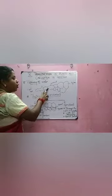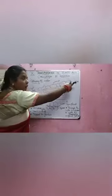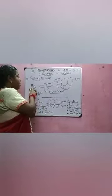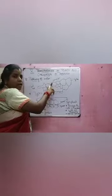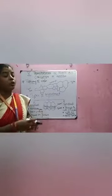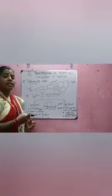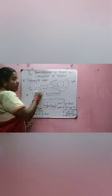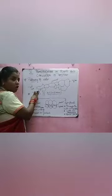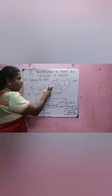From the root hair, water is passed over to the cortex cell — the cells present between the root and the xylem. This transmission happens by the process of osmosis. Osmosis is the movement of solvent from higher concentration to lower concentration. When you see the root hair, the concentration of water is high compared to the cortex, so the water moves from higher concentration to lower concentration.